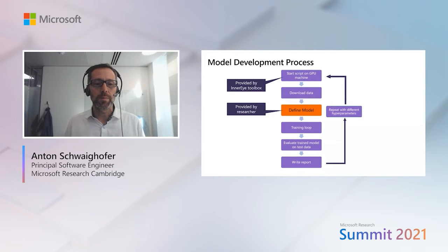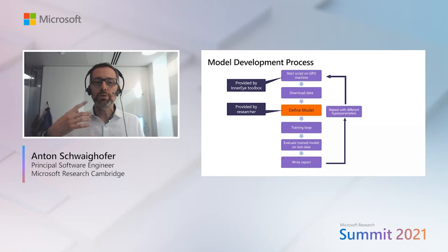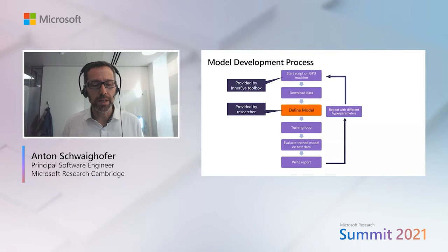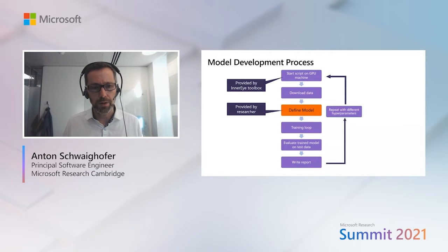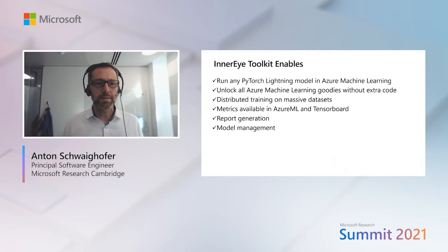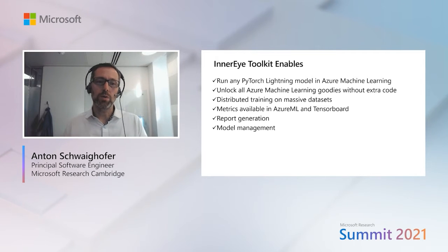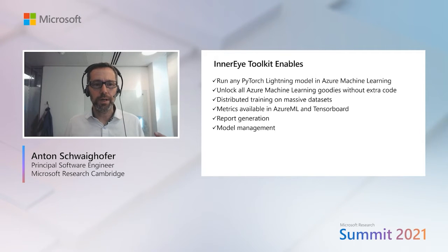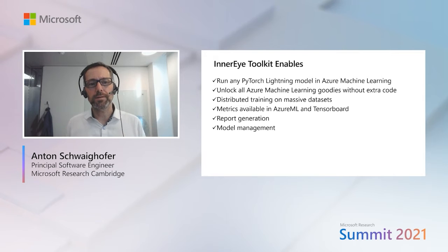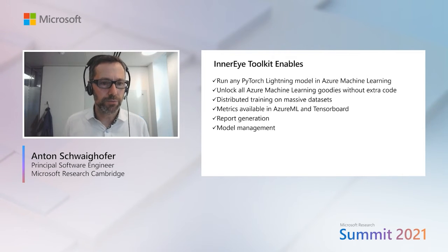There are also provisions for automatic hyperparameter tuning — for example, rerunning training with a changed learning rate — and this is all thanks to the functionality built into Azure Machine Learning, specifically Azure ML's HyperDrive functionality. What I'd like you to remember is that with the InnerEye toolkit, you can take any PyTorch Lightning model and run it in Azure Machine Learning or on your local machine. PyTorch Lightning, if you haven't used it before, is a super helpful abstraction layer on top of PyTorch that does away with a lot of the repetitive boilerplate code in typical deep learning training scripts.